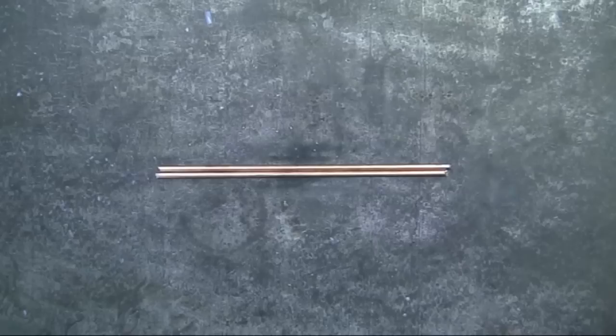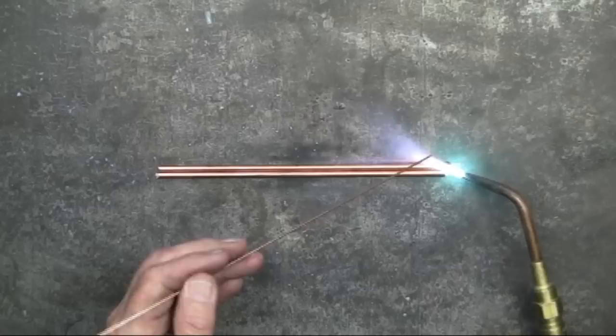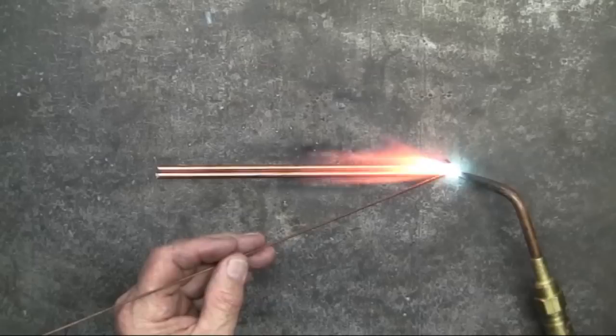When I first started learning how to braise and weld with the oxygen acetylene torch, I would put two rods parallel with each other just like this. Then I would begin to either braise or weld from one end.